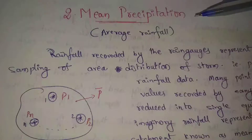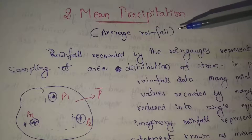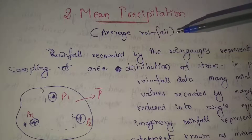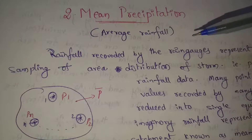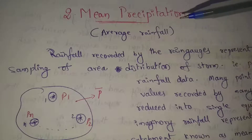Next topic: Mean Precipitation. Mean precipitation is simple — it is average rainfall. We will discuss this simple mean precipitation.